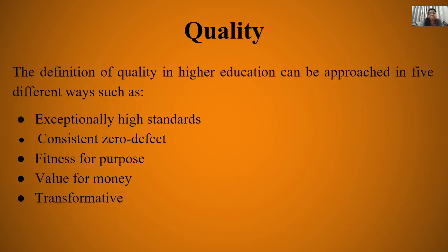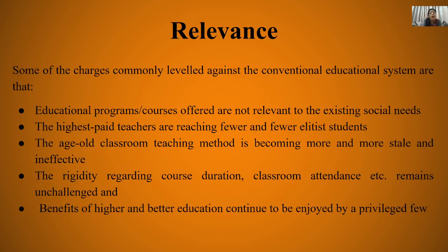Regarding quality — when higher education is discussed, it should have an exceptionally high standard; substandard higher education is unacceptable. Key quality parameters include: consistent zero defect, fitness for purpose — the purpose of enrolling should be fulfilled; value for money — returns should match investment; and transformative — when a learner completes higher education, a genuine transformation should have occurred. However, the conventional education system has not been able to achieve this, which is another reason why distance education is needed.